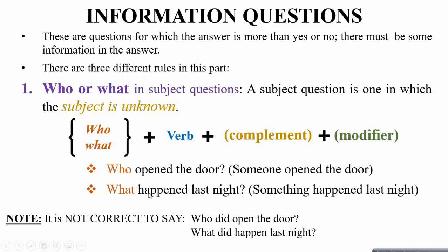What happened last night? Something must have happened last night — we are asking what it was and who did it. This is all about asking about the subject in the sentence, using who and what questions.